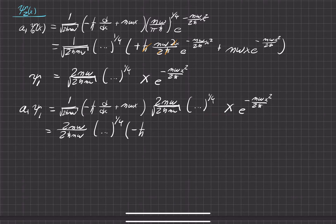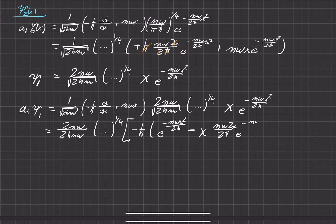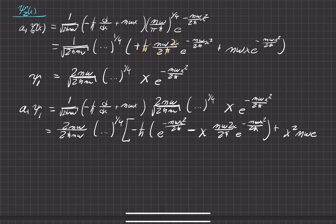We have negative h-bar times the spatial derivative of x times e to the negative m-omega x squared over 2 h-bar. We're going to have to do some chain rule here. The derivative of x gives just one times the exponential, and then x times the derivative of that exponential gives negative m-omega 2x over 2 h-bar times the exponential. Also distributing gives x squared times m-omega e to the negative dot dot dot x squared.